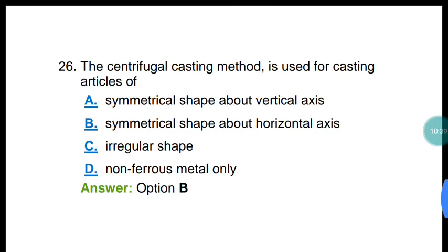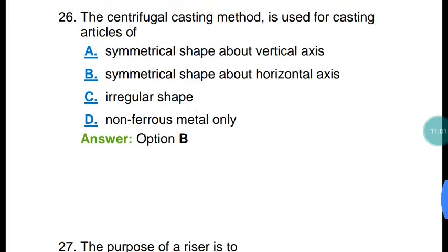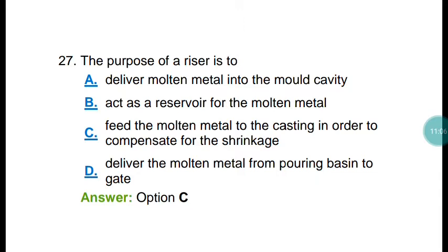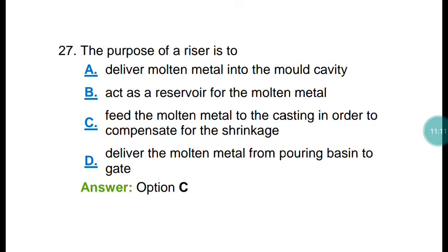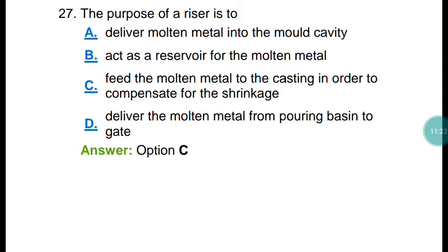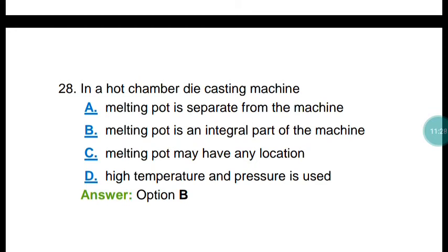Question number twenty-six: the centrifugal casting method is used for casting articles of symmetrical shape about a horizontal axis, such as pipes. Question number twenty-seven: a riser is used to feed molten metal to the casting in order to compensate for shrinkage. The correct answer is option C.